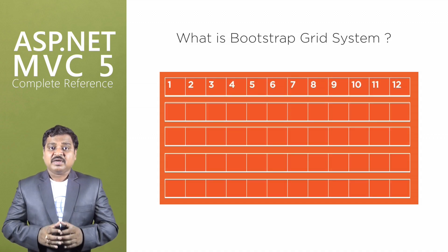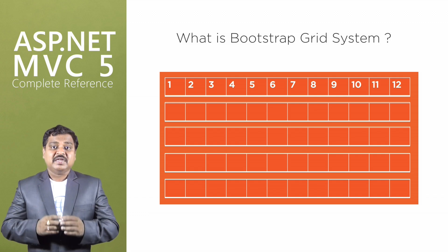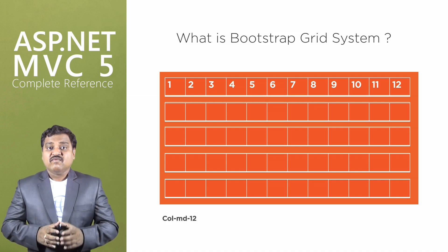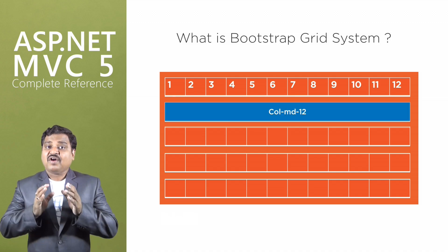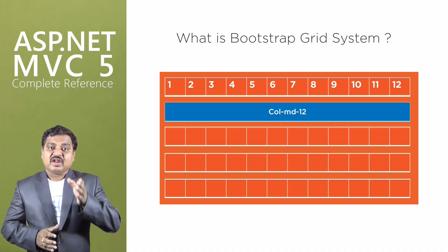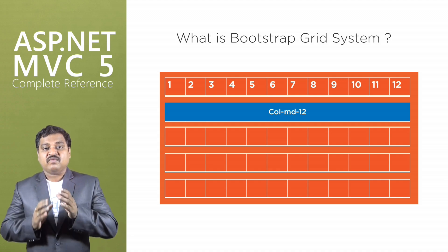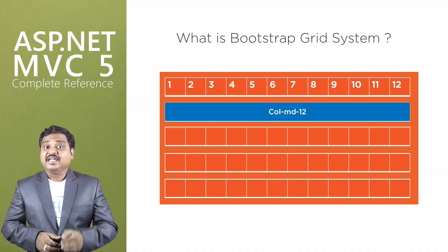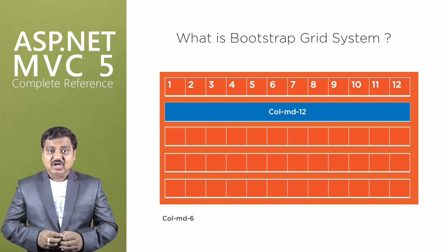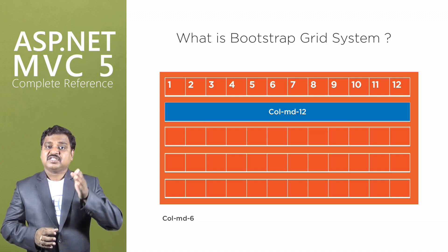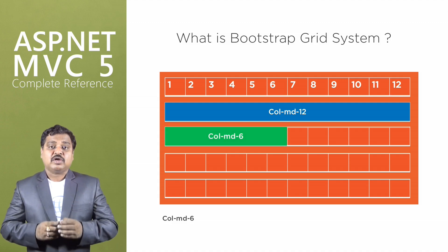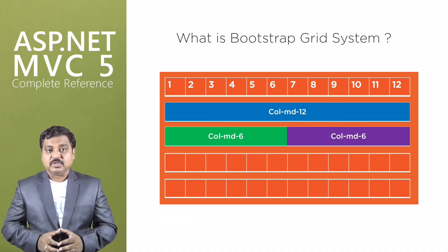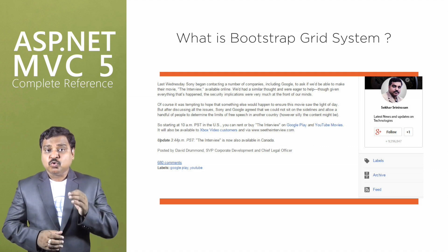If our requirement is to have full-width content displayed on a medium device, then we use col-md-12, which will occupy all 12 columns. If our requirement is a two-column layout where half the screen is occupied with one content and the other half with different content, then we use col-md-6 for the first six columns and col-md-6 again for the remaining six columns.